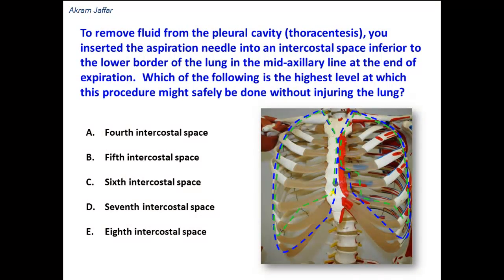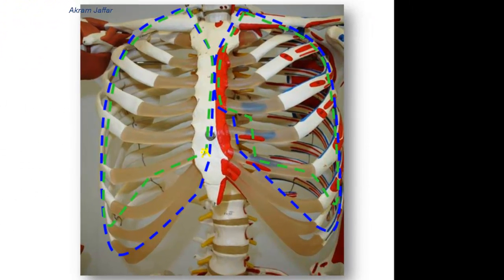As you can see here, the lung is located behind the midline of the sternum at the level of the 6th costal cartilage. It then extends laterally along the thoracic wall, crossing the mid-clavicular line at the level of the 6th costal cartilage, then crosses the mid-axillary line at the level of the 8th costal cartilage, and then passes around the thoracic wall, crossing the 10th rib on the side of the vertebral column.